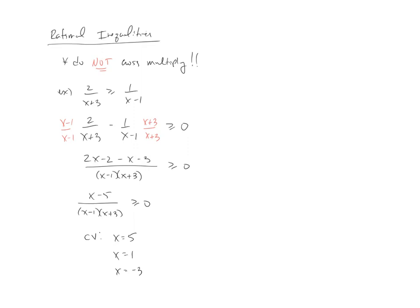So those are the numbers now that I would take, and I'd go ahead and I'd put on the number line. I've got a negative 3, a 1, and a 5.